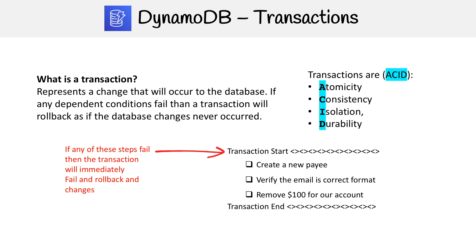For example, first we create a new payee, then we verify that the email is in the correct format before sending out the money. If the email turns out not to be correct, it stops and rolls back — so none of those actions actually occurred. That is transactions in a nutshell.